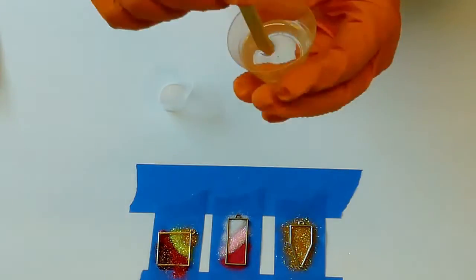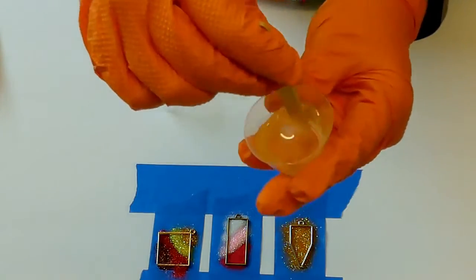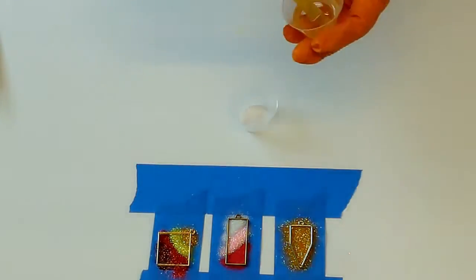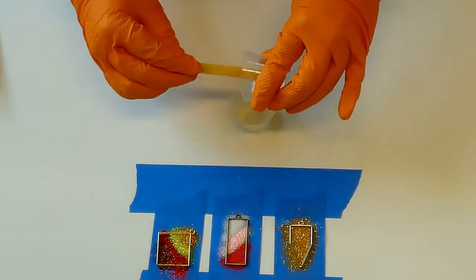Stir slowly to avoid making bubbles and scrape the sides periodically for 2 full minutes. Pour the mixture into the second measuring cup, scraping the sides to get everything out.